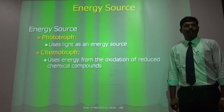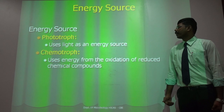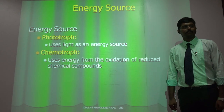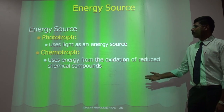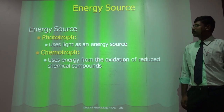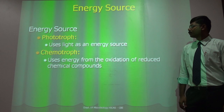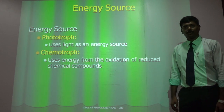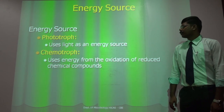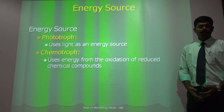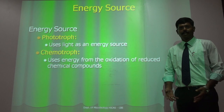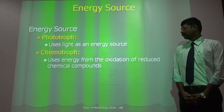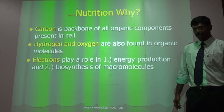Regarding energy sources, microorganisms can get energy from sunlight — such organisms are called phototrophs. If they utilize energy from chemicals, they are called chemotrophs.